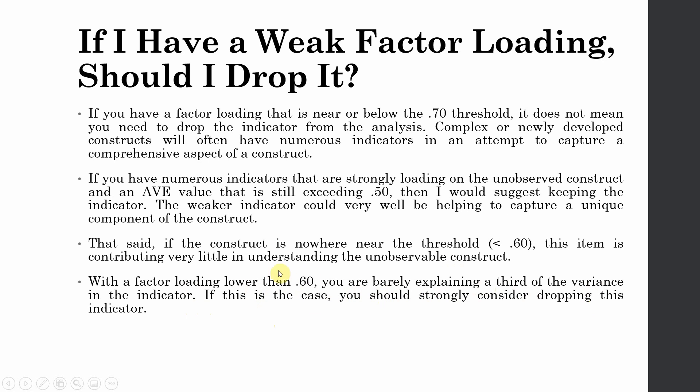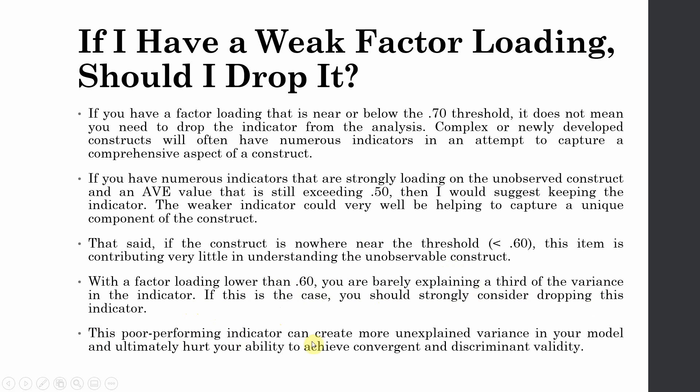This particular item with loading less than 0.60 is not explaining enough variance in the indicator, so in this case it should be deleted. This poor performing indicator can create more unexplained variance in your model and ultimately hurt your ability to achieve convergent and discriminant validity. There is more unexplained variance than explained variance in your model, which can obviously affect the convergent and discriminant validity.